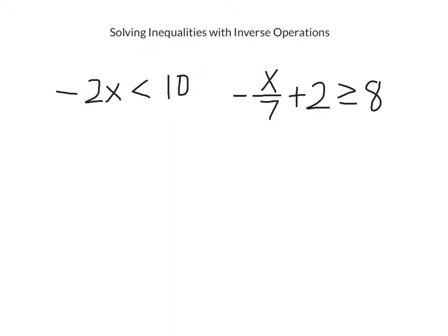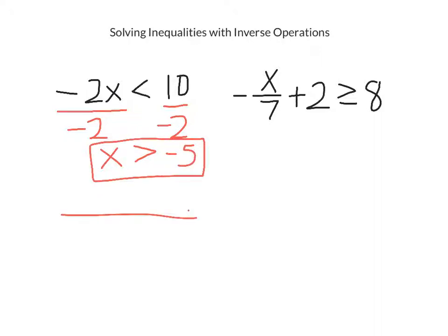The one on the left is a one-step inequality, which means it takes one step to undo the multiplication. And I undo the multiplication by dividing both sides by negative 2. And as soon as I divide by negative 2, I turn the inequality symbol around or else I forget. And x is greater than negative 5.